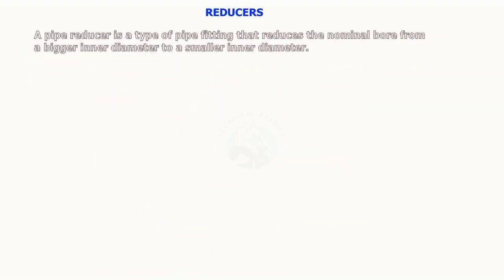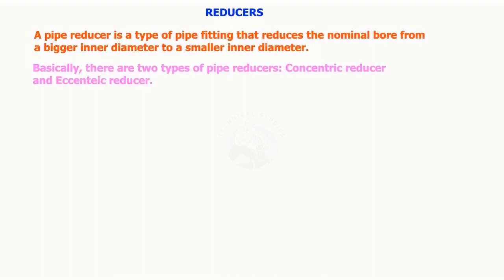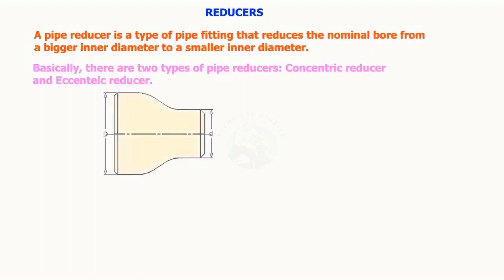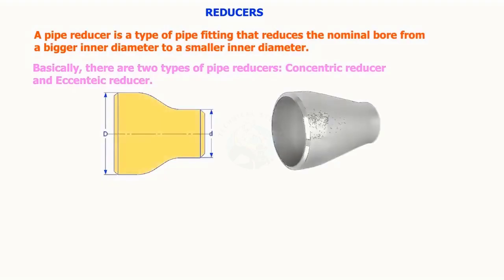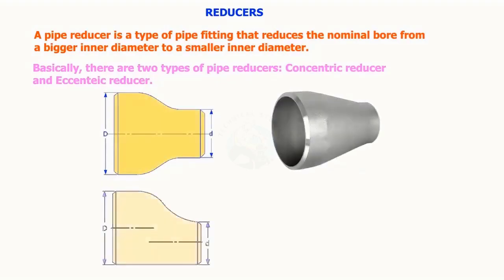A pipe reducer is a type of pipe fitting that reduces the nominal bore from a bigger inner diameter to a smaller inner diameter. Basically, there are two types of pipe reducers: concentric reducer and eccentric reducer.